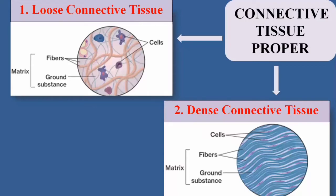The other type of connective tissue proper is dense connective tissue. As you can see in the diagram, dense connective tissue has more fibers. In the matrix, there are more fibers and less ground substance. That is why these connective tissues are involved in the formation of harder organs that provide structural support and strength.